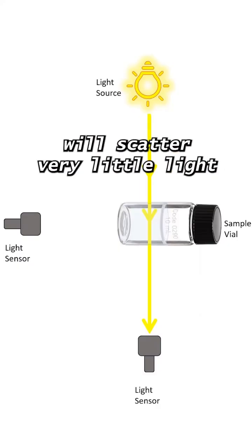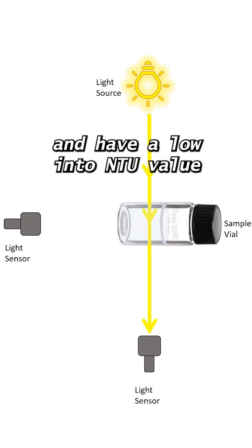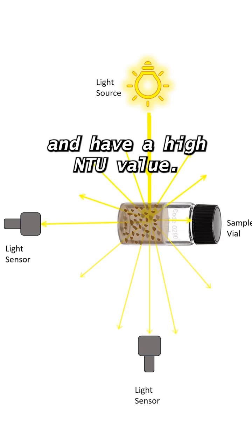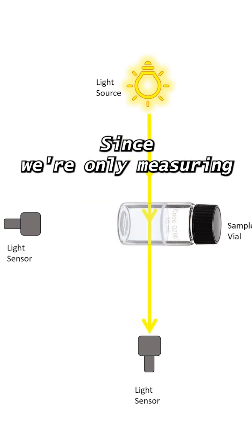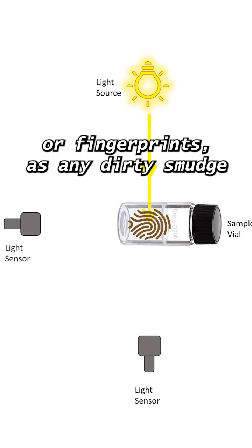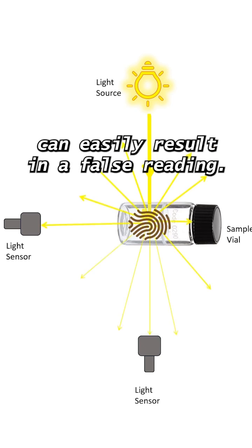Samples with low turbidity will scatter very little light and have a low NTU value, whereas samples with high turbidity will scatter more light and have a high NTU value. Since we're only measuring the amount of light that's reflected, we want to make sure our vial is free of scratches or fingerprints, as any dirty smudge can easily result in a false reading.